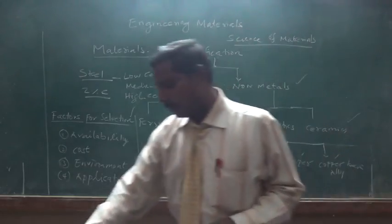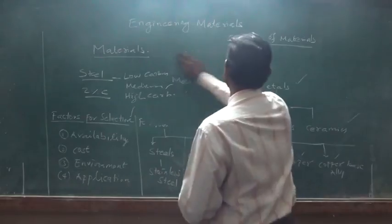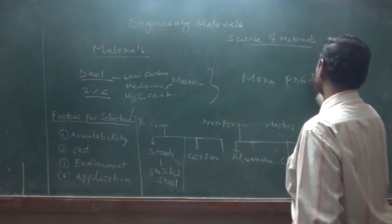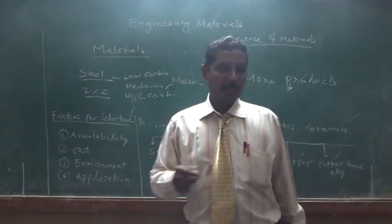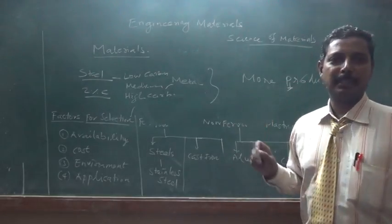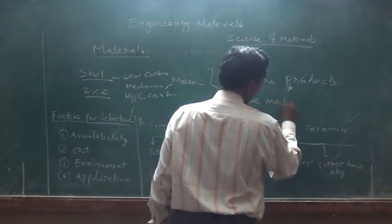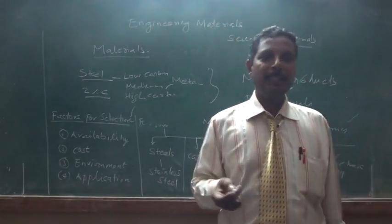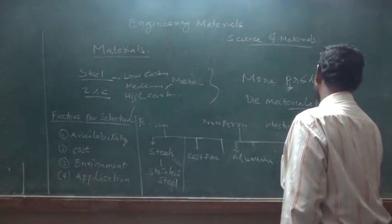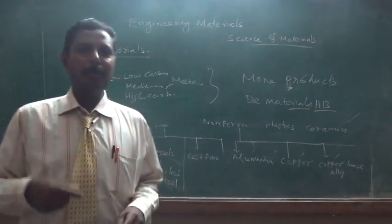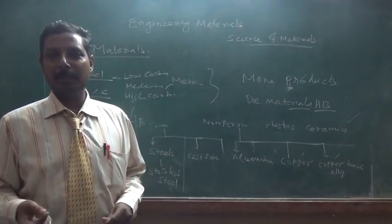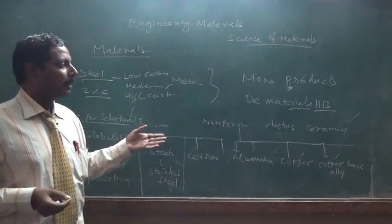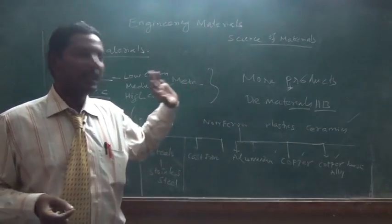High carbon steels are used in tool steels and major applications of shafts and crankshafts. We are going to produce a huge amount of production using high carbon steels. The die material is made of high carbon steel — for example, acetate die material is generally used. This type of die material is used to produce more products simultaneously. We are also using die steels for aluminum and copper production methods with similar die materials.